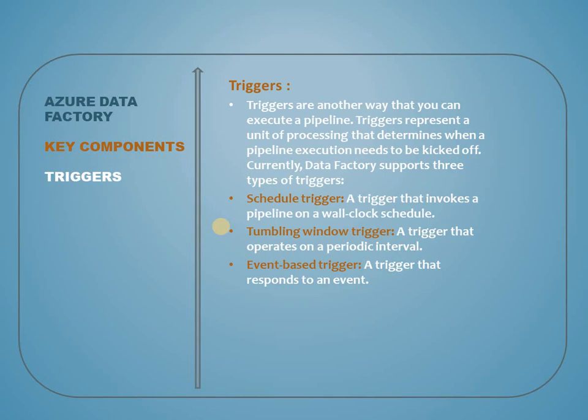The next key component is Triggers. Pipelines can be executed manually or by using triggers. Triggers are another way to execute developed pipelines — they determine when pipeline execution needs to be kicked off. Currently, Data Factory supports three types of triggers: scheduled triggers, tumbling window triggers, and event-based triggers. Scheduled triggers invoke pipelines based on time schedules.